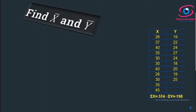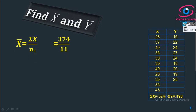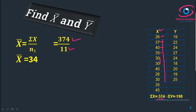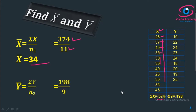Worker A data is considered as X values and worker B data as Y values. The total value of X is 374 and the number of samples n1 is 11, so X bar equals 374 divided by 11, which gives X bar equal to 34. Worker A's average is 34. For worker B, the total value of Y is 198 and the number of samples n2 is 9, so Y bar equals 198 divided by 9, giving Y bar equal to 22. We have now found X bar and Y bar.